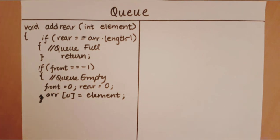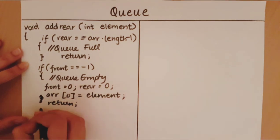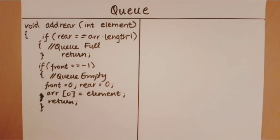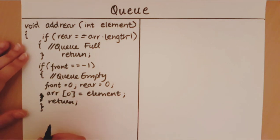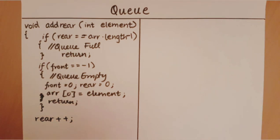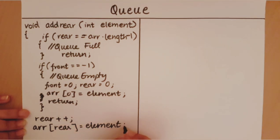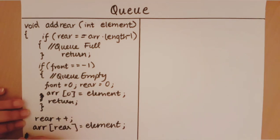Now we have added this element to the array. Our work for the first element in the queue is done and we can return from the function. When we come to the next line, this code runs for all other add operations into a queue — the normal operation. The first thing I do is increment rear by one, and to this new rear position I add the element. With this, the function comes to an end. This is how you add an element to the rear of a queue.